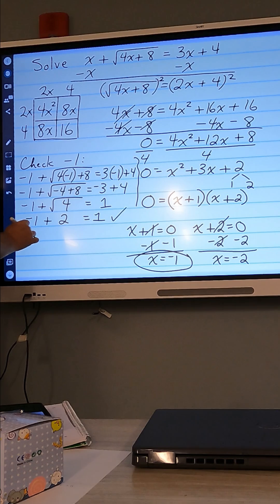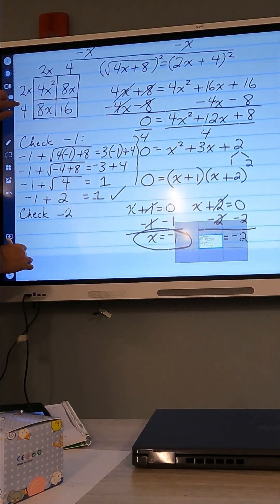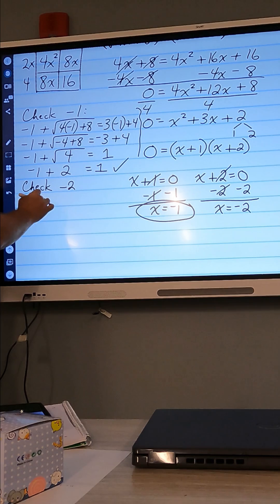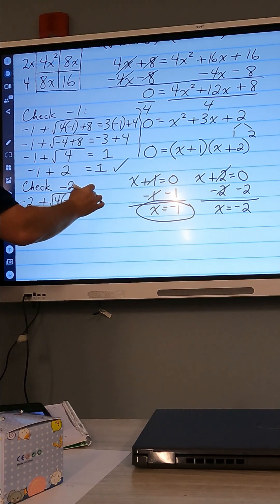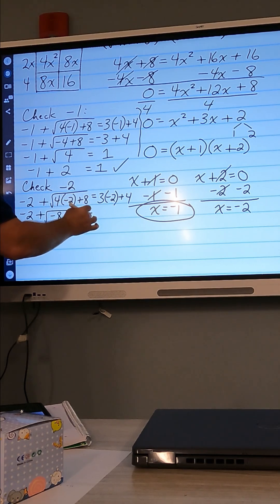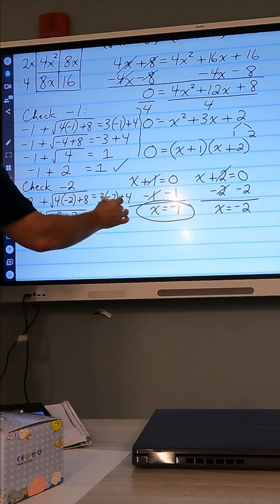We'll also now check negative 2. So we have negative 2 plus the square root of 4 times negative 2 plus 8. Does that equal 3 times negative 2 plus 4? Well, we have negative 2 plus, this is going to be negative 8 plus 8. Does that equal negative 6 plus 4?